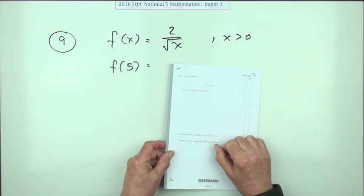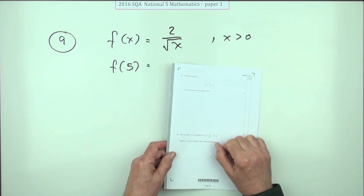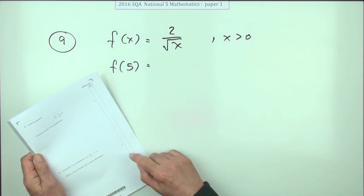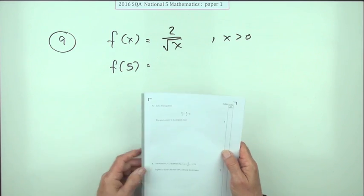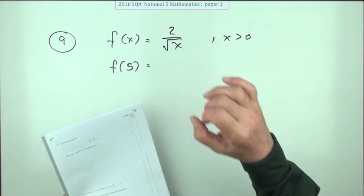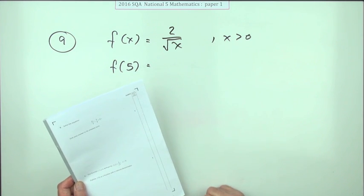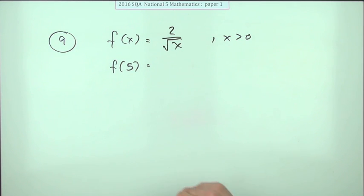Number nine from paper one of the 2016 National Five, a two mark question which is rationalize the denominator. Except it's not just giving you the fraction to begin with with its little irrational denominator, it's giving you a function instead.